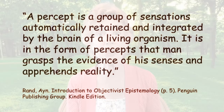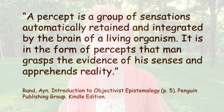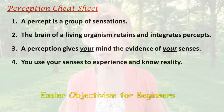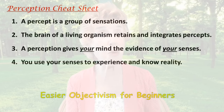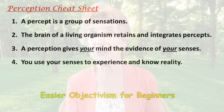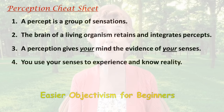In ITOE, Ayn Rand writes: a percept is a group of sensations automatically retained and integrated by the brain of a living organism. It is in the form of percepts that man grasps the evidence of his senses and apprehends reality. We can put four easier sentences on the perception cheat sheet: a percept is a group of sensations; the brain retains and integrates percepts; a percept gives your mind the evidence of your senses; you use your senses to experience and know reality.